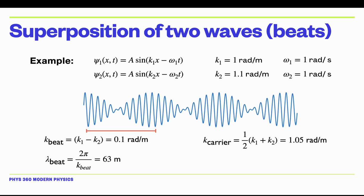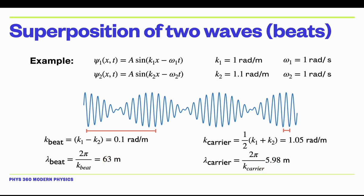The carrier wave number is the average of k1 and k2 — the average of 1 and 1.1 is 1.05. The corresponding carrier wavelength is 5.98 meters — more than 10 times smaller than the beat wavelength. That carrier wavelength corresponds to the wavelength of the high-frequency carrier component of the wave.